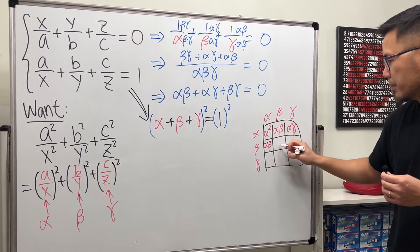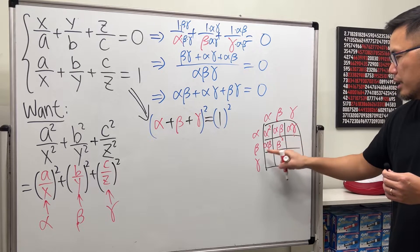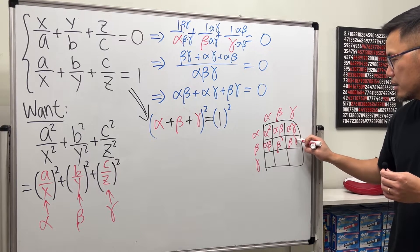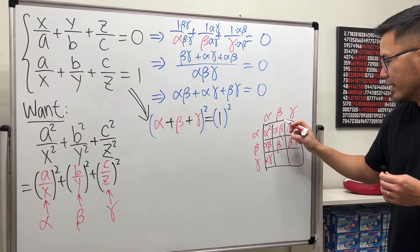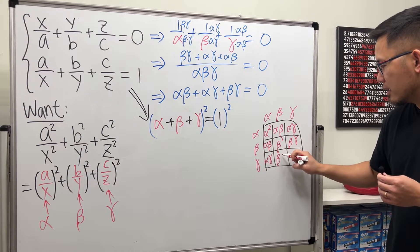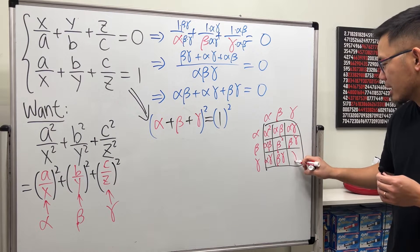And then you just continue here and here. It's alpha beta, and then beta beta, which is beta squared, and then beta gamma. And then just continue alpha gamma, and then beta gamma, and then gamma gamma, gamma squared.